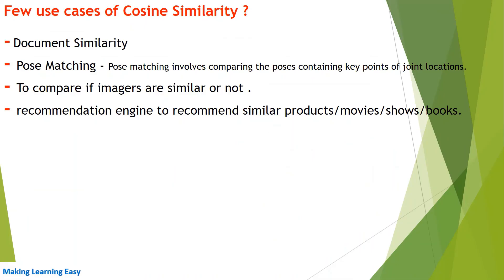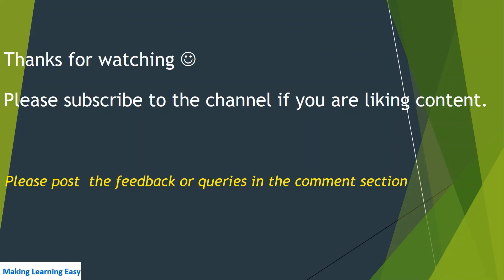A few important use cases of cosine similarity: first, finding the similarity between documents, which we have seen with this example. Second, pose matching — comparing poses by using key points of joint locations to determine if images are similar. Third, building a recommendation engine to recommend similar products, movies, shows, and books. These are the few important use cases of cosine similarity. That's all for this session, thanks for watching.